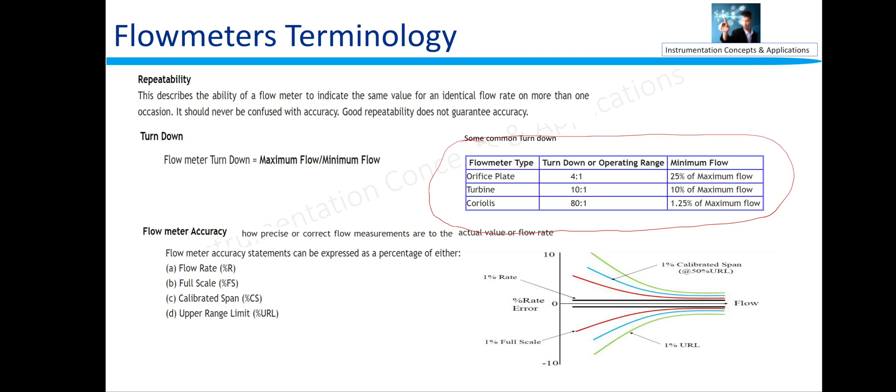Coriolis has a good turn down ratio, 80 is to 1. 1.25% of maximum flow rate can be read accurately. And in this diagram we can see that for the lesser flow, the error is very much high as compared to this, which is 1% of the error.